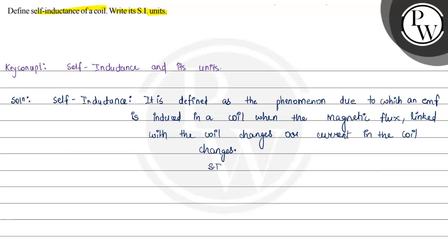Its SI unit is volt per ampere per second, or we can write weber per ampere. Generally, the SI unit of self inductance is henry. Hope you understood it well — best of luck.